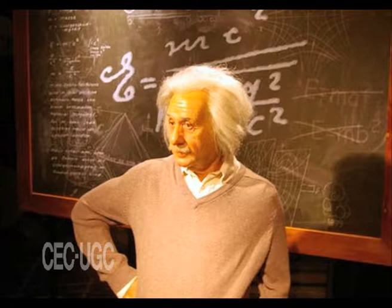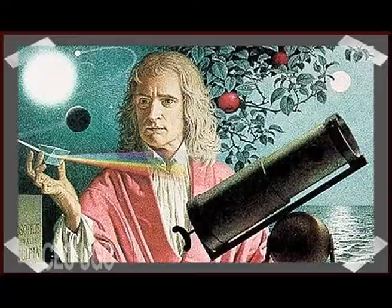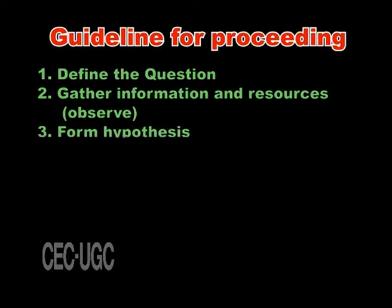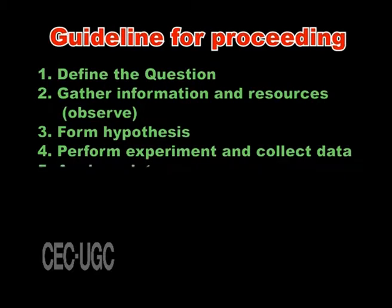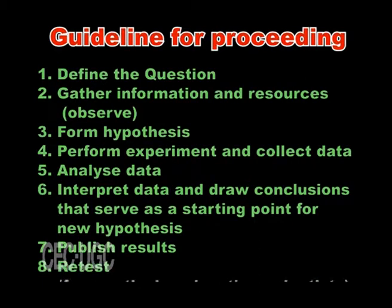Einstein's theories are expansions and refinements of Newton's theories and thus increase our confidence in Newton's work. A linearized pragmatic scheme is sometimes offered as a guideline for proceeding: define the question, gather information and resources, form a hypothesis, perform experiments and collect data, analyze data, interpret data and draw conclusions that serve as a starting point for a new hypothesis. Ultimately, the results have to be published and retested, frequently done by other scientists. The iterative cycle inherent in this step-by-step methodology goes from point 3 to 6 and back to 3 again.